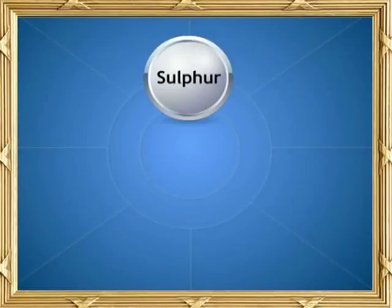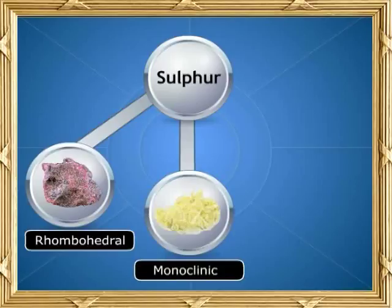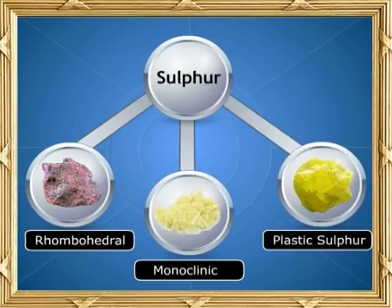Sulphur exists in three allotropic forms, namely rhombic, monoclinic, and plastic sulphur.